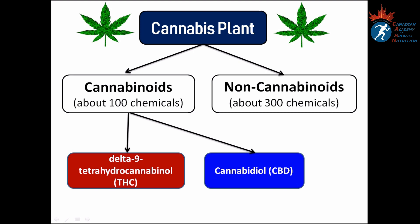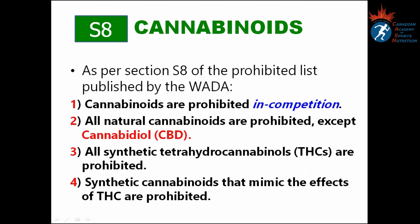Cannabis plant contains two types of chemicals: cannabinoids and non-cannabinoids. As you can see on the slides, there are about 100 cannabinoids and about 300 non-cannabinoids. Among cannabinoids, two famous ones are tetrahydrocannabinol, known as THC, and cannabidiol or CBD. THC has strong psychoactive effects — it is THC that makes someone high when they take cannabis products — but CBD has no psychoactive effects. As per section S8 of the prohibited list published by WADA, cannabinoids are prohibited in competition only, unlike anabolic steroids and peptide hormones which are prohibited in and out of competition. All natural cannabinoids are prohibited except cannabidiol.